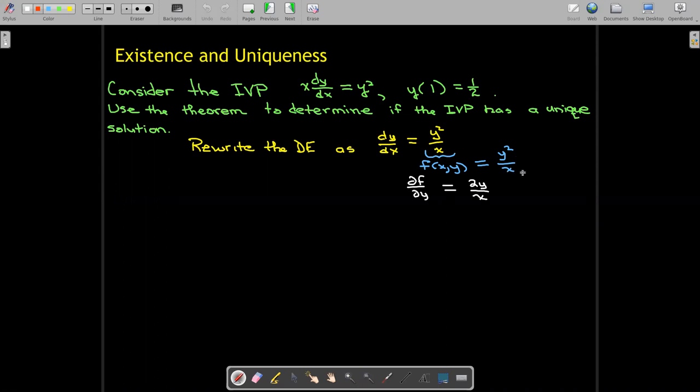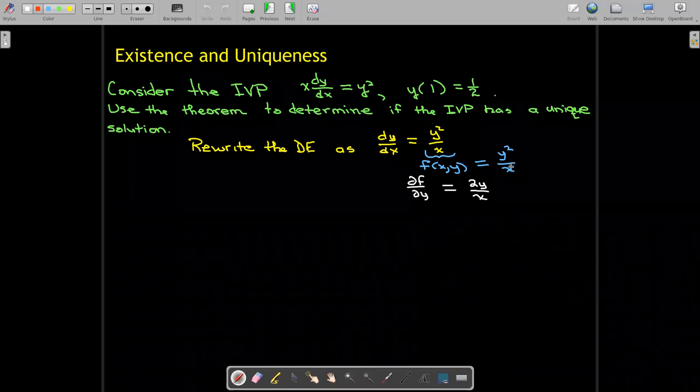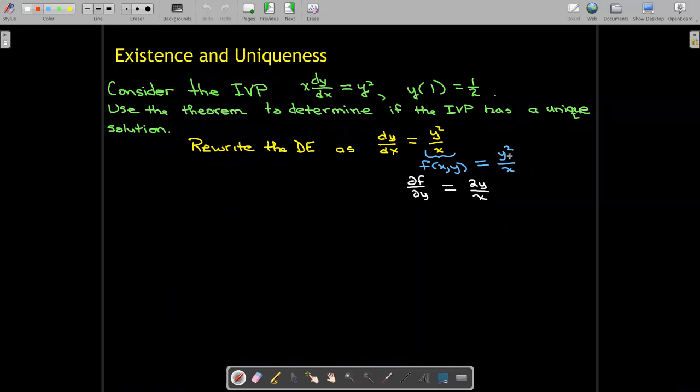How would I take the derivative? Well, I'm taking the derivative with respect to y. The derivative of y² with respect to y will be 2y, and I'll still have over x. Now both of those functions are continuous when x is not equal to zero.